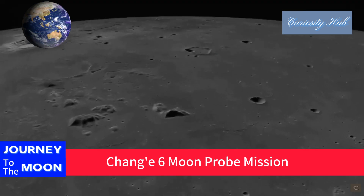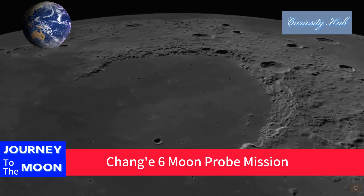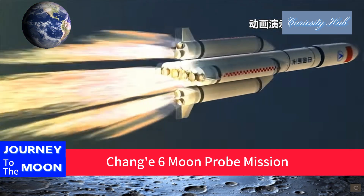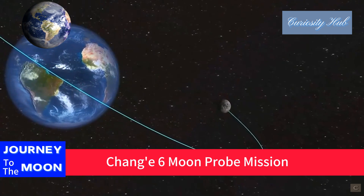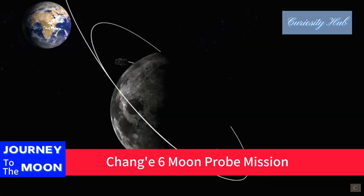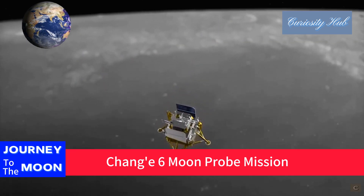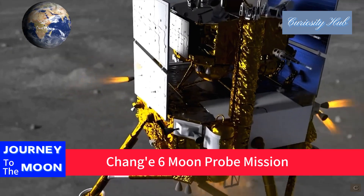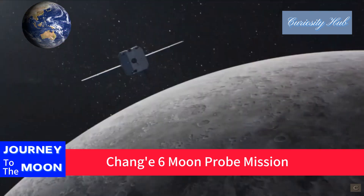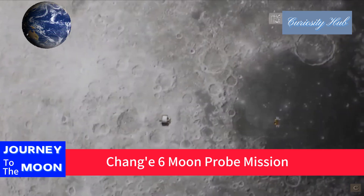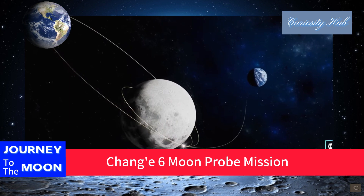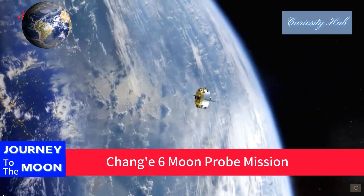The Chang'e 6 mission mainly consists of 11 flight stages: launch and orbit insertion, Earth-Moon transfer, lunar orbit insertion, circumlunar flight, descent and landing, lunar surface operations, lunar surface ascent, rendezvous and docking with sample transfer, circumlunar waiting, lunar-Earth transfer, and re-entry and recovery.